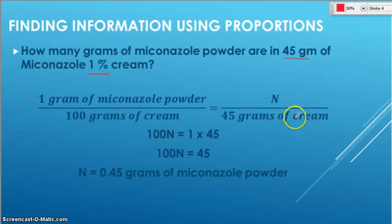We're ready to cross multiply. 100 times N is 100N. 1 times 45 is 45. Divide both sides by 100. Make sure you put that in your calculator. When you do the 45 divided by 100, everything will come up properly in your calculator. And that's how you get the 0.45.